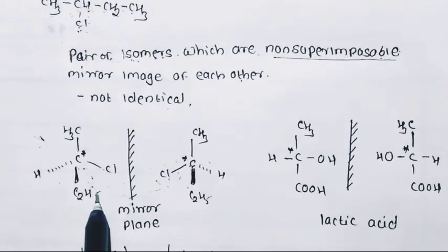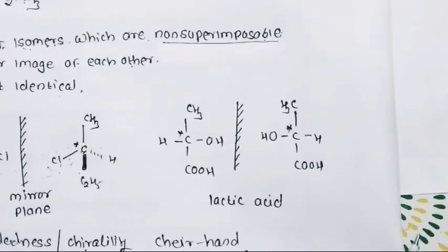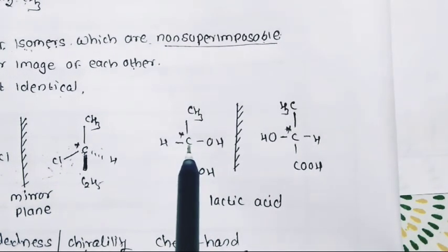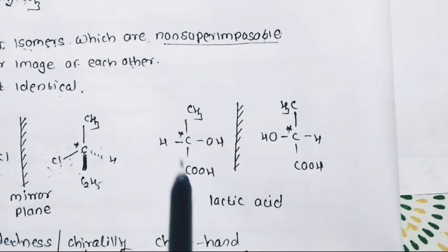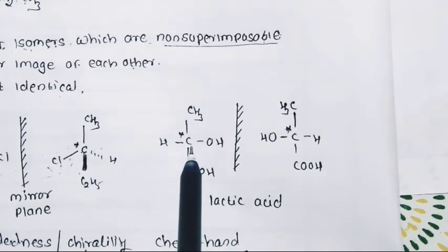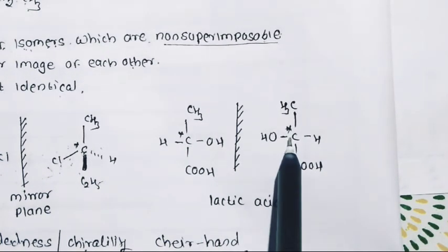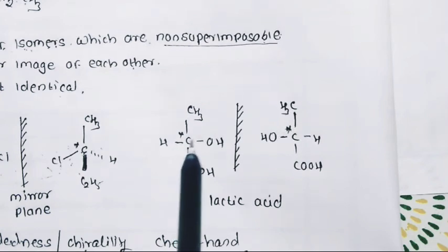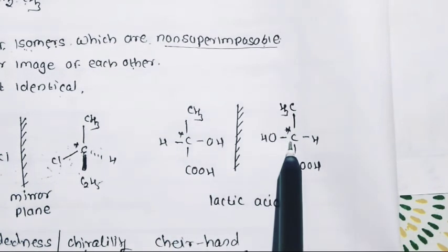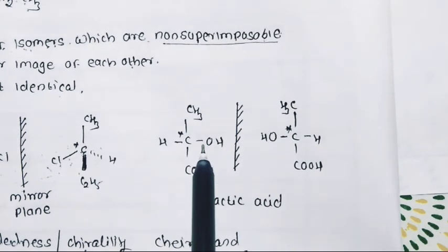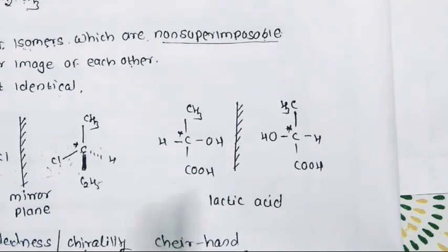A chiral molecule and its mirror image are both not identical. Because molecular formula is the same, structural formula is the same, but the spatial arrangement of the four groups attached to the chiral carbon is different. Another example: lactic acid has a chiral carbon with four different groups. Its mirror image has OH on the right versus the left — also a non-superimposable mirror image of each other.